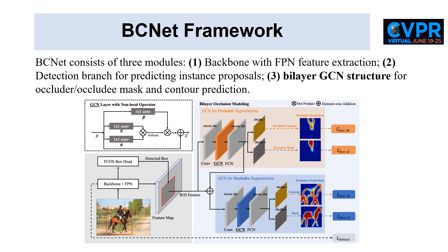BCNET with bilayer occluder-occluded relational modeling consists of three modules. First, backbone with FPN for feature extraction from the input image. Second, detection branch for predicting instance proposals. Third, BCNET with bilayer GCN structure for mask prediction.